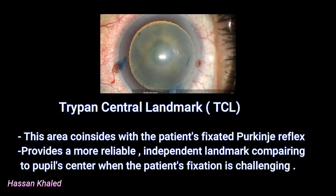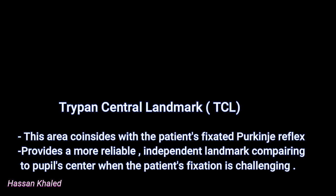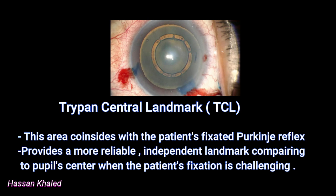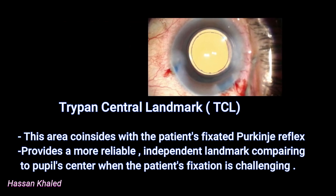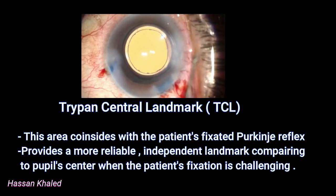Let's go to see another case. Here we can see a beautiful approximately 2 mm tri-band central landmark coinciding with the Purkinje image or Purkinje reflex. The capsulorrhexis is concentric with the tri-band central landmark; however, it is eccentric with the pupil center. Look at the result: a beautiful 360 degrees of symmetrical overlapping of the capsulorrhexis with the edge of the optic of the IOL.